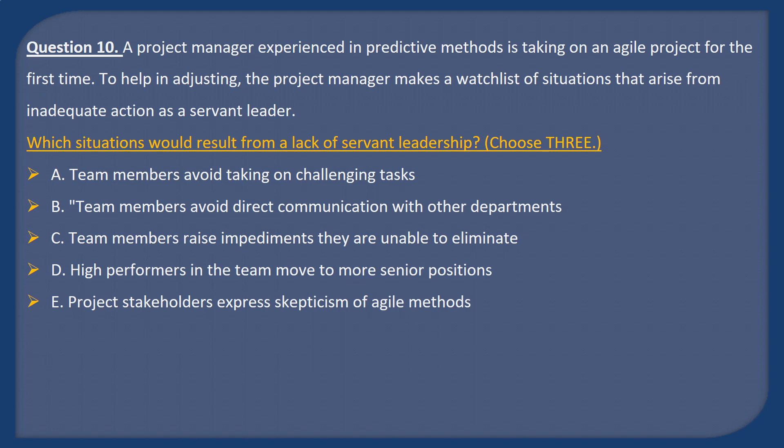Question 10. A project manager experienced in predictive methods is taking on an Agile project for the first time. To help in adjusting, the project manager makes a watch list of situations that arise from inadequate action as a servant leader. Which situations would result from a lack of servant leadership? Choose three. A: Team members avoid taking on challenging tasks. B: Team members avoid direct communication with other departments. C: Team members raise impediments they are unable to eliminate. D: High performers in the team move to more senior positions.